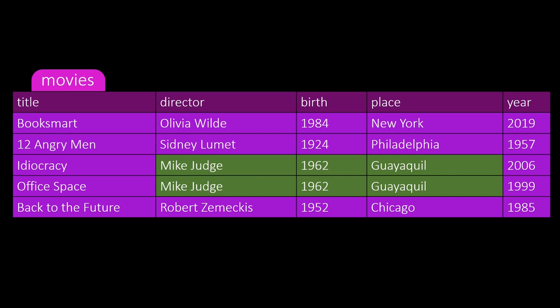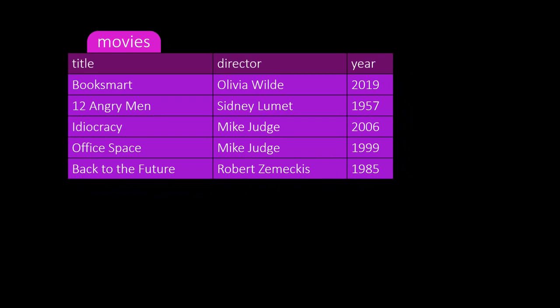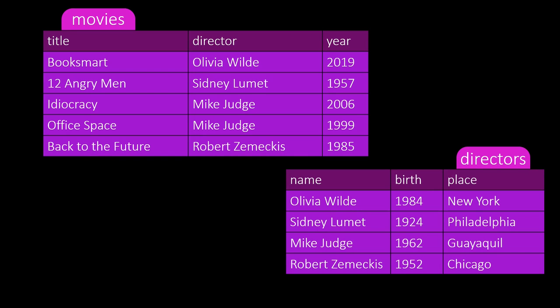Instead, we should have an entirely new table just for directors. This table stores all the director-specific data like their year and place of birth. If we want to know some details about a movie director, we simply look up that information in the specific director table by doing a name match.